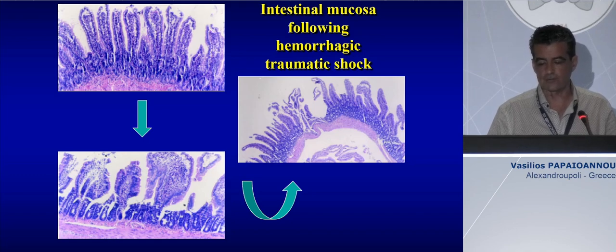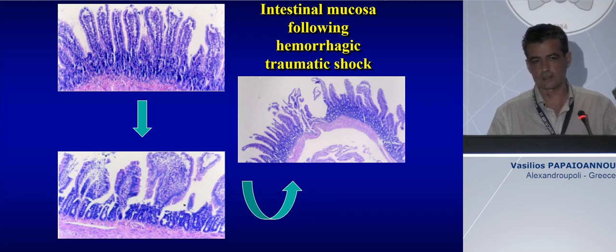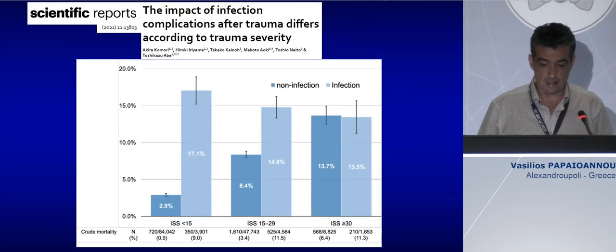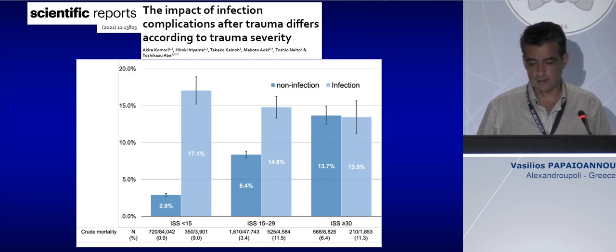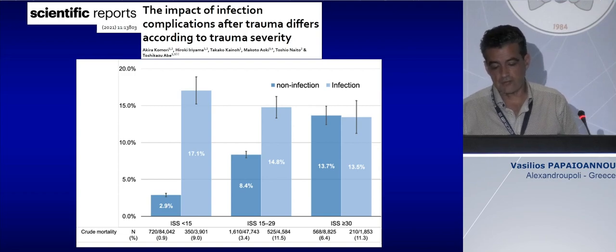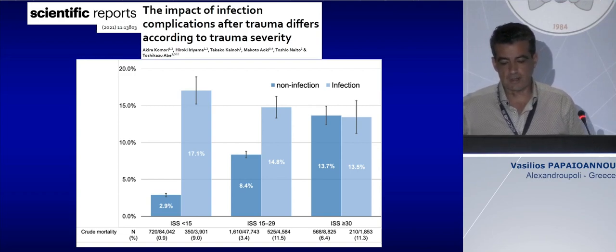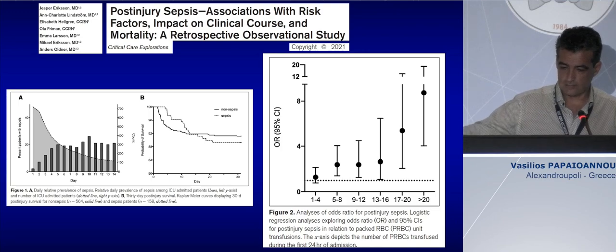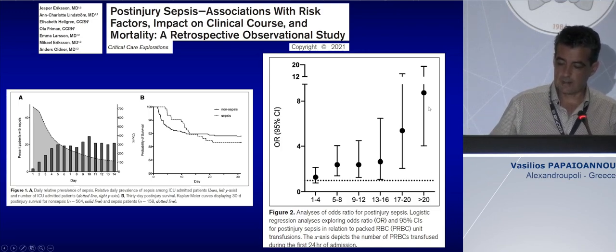I also remind you of the known theory of loss of intestinal barrier function due to hemorrhage, which can induce a shift of different toxins from the portal vein towards the liver, activate the Kupffer cells, and cause massive production of pro-inflammatory cytokines. A study including approximately 70,000 patients from Japan showed that only patients with moderate trauma — based on the injury severity score — had increased mortality attributed to infection of around 50%, whereas patients with injury severity score more than 30 showed no difference in mortality between those who developed infection and those who did not.